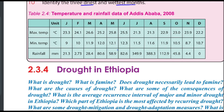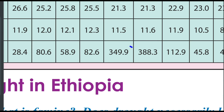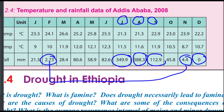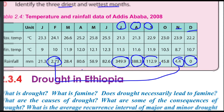Using the data, identify the wet and dry seasons. The wet season runs from July, August, and September. The dry season corresponds to December and the surrounding months. Identify total annual rainfall from the data provided.